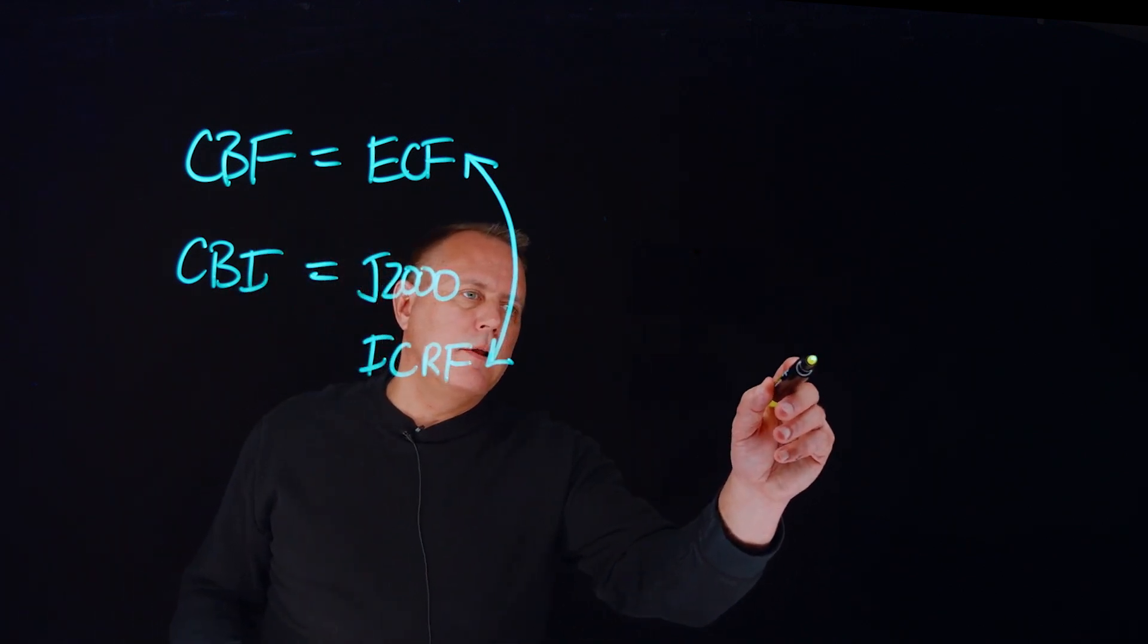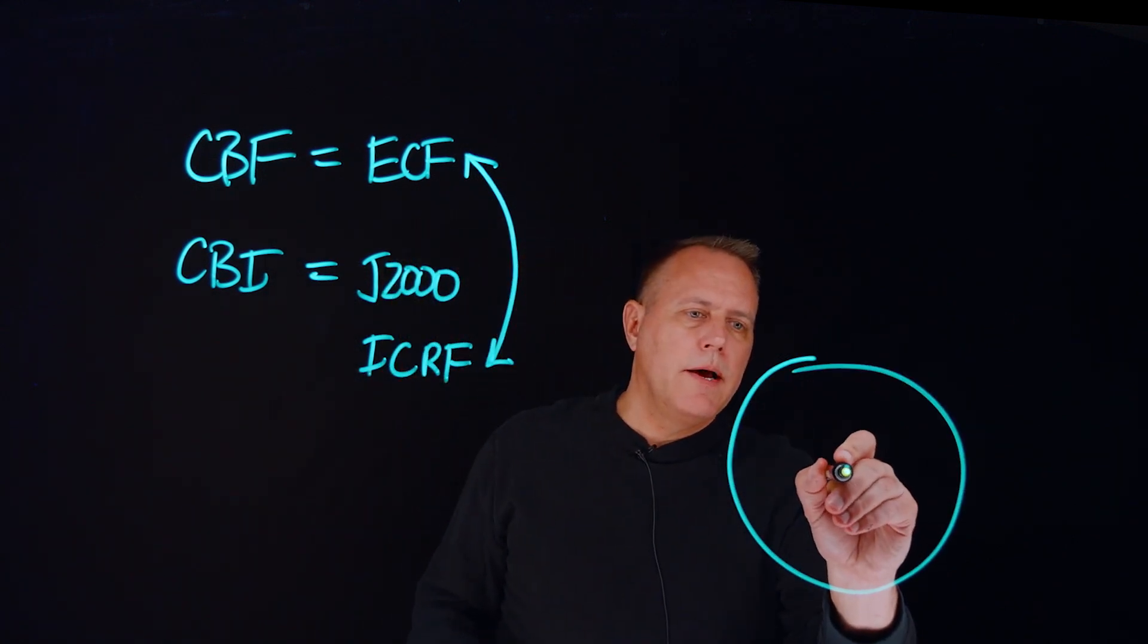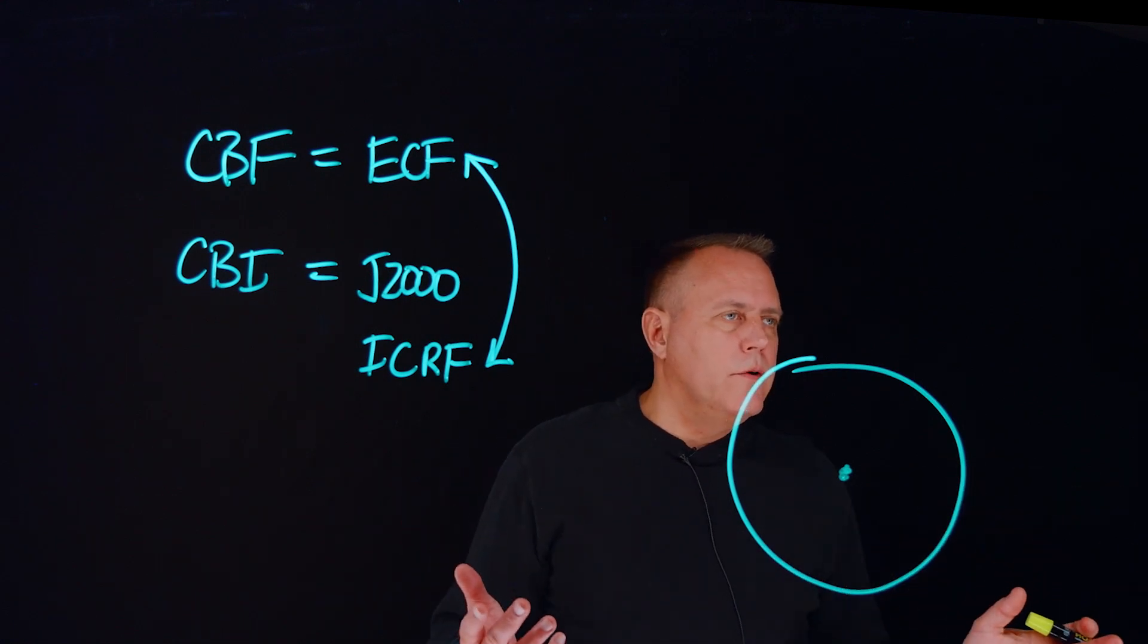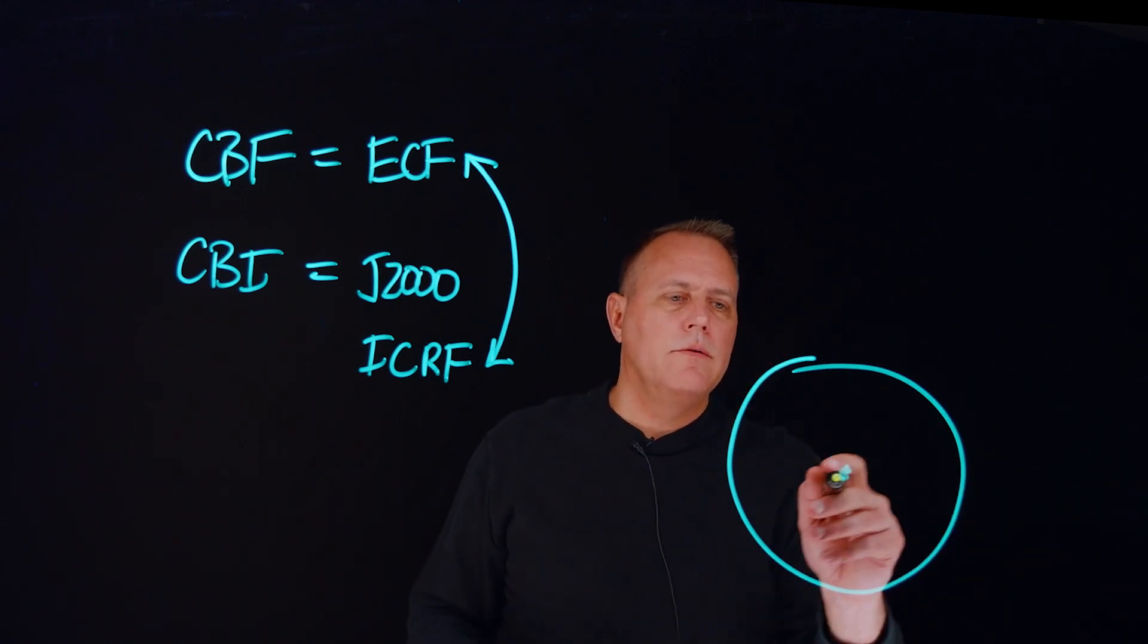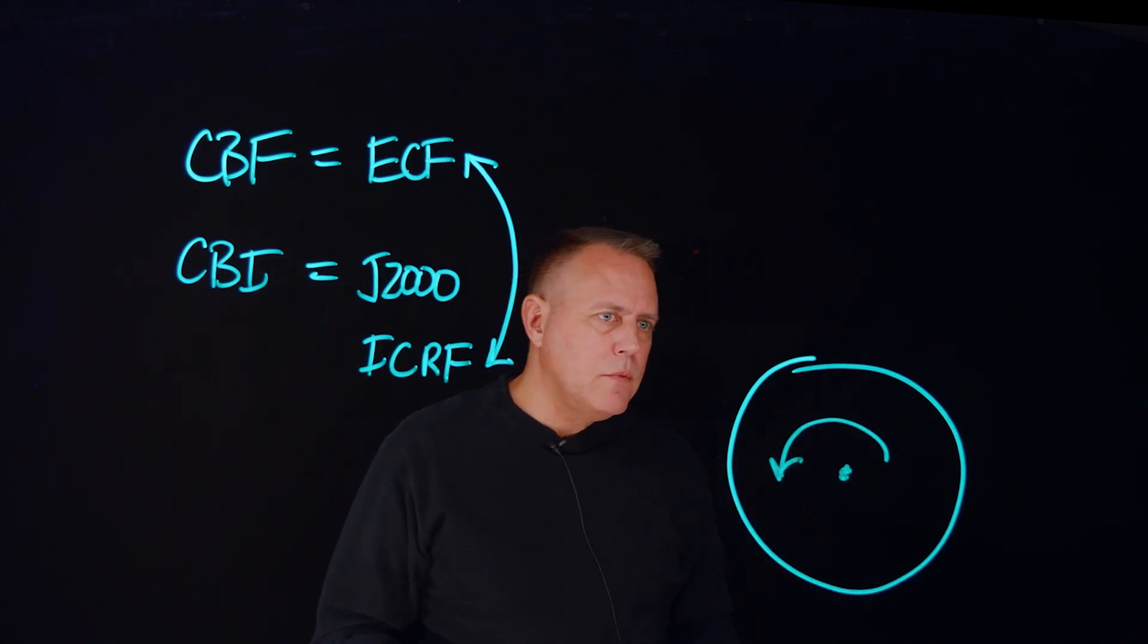If I think of the top down view of the earth here, and I'm looking down the North Pole, most commonly we know the earth is moving because we're rotating, right? So the earth is rotating looking like this.